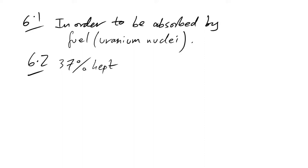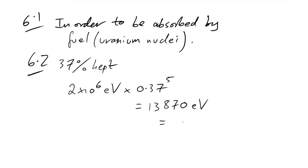Question 6.2: a neutron loses 63% of its kinetic energy per collision, so it retains 37%. Starting with 2 MeV (= 2×10⁶ eV), after 5 collisions the energy is 2×10⁶ × (0.37)⁵ ≈ 14,000 eV, or 1.4×10⁴ eV.